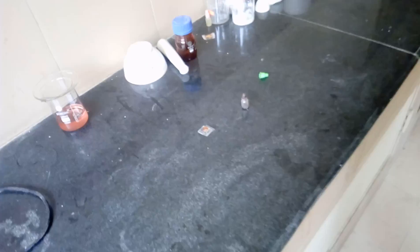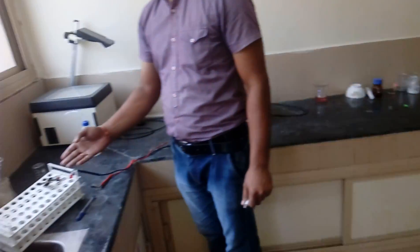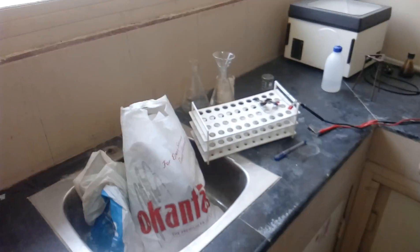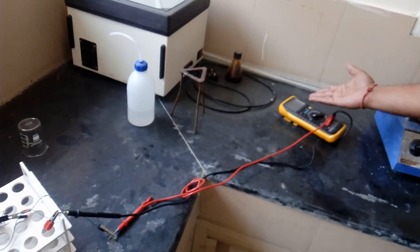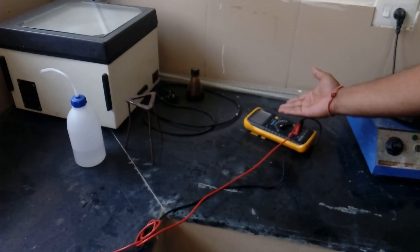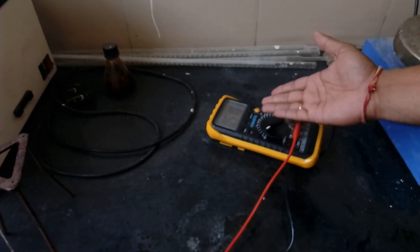Now connect this cell with the multimeter to check the performance of the cell. The output voltage of the cell is 0.510 volt.